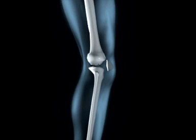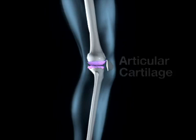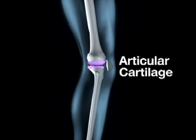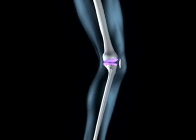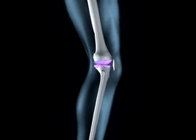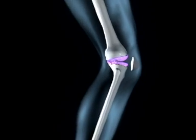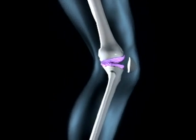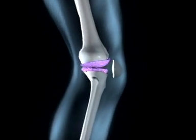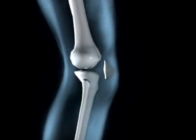The knee joint connects the thigh and shin bones. A thin, smooth, cushioning cartilage, known as articular cartilage, covers the moving surfaces inside the joint. This serves as shock absorber and lubrication for the bones. However, it is subject to wear and tear. If the loads on the joint are too high, articular cartilage degenerates and is worn away, leaving the bones to rub against each other.